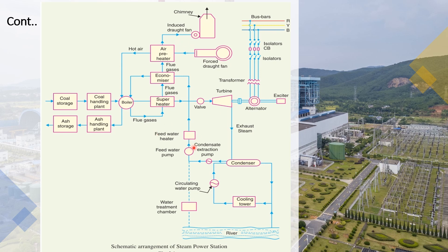The feed water pump feeds water to the feed water heater, and then to the economizer. In the economizer, the heat from flue gases is extracted, which reduces the boiler load. This increases the overall efficiency of the plant.